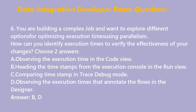Question 6: You are building a complex job and want to explore different options for optimizing execution times using parallelism. How can you identify execution times to verify the effectiveness of your changes? Choose two answers. A. Observing the execution time in the code view. B. Reading the timestamps from the execution console in the run view. C. Comparing timestamps in trace debug mode. D. Observing the execution times that annotate the flows in the designer. Answer: B, D.